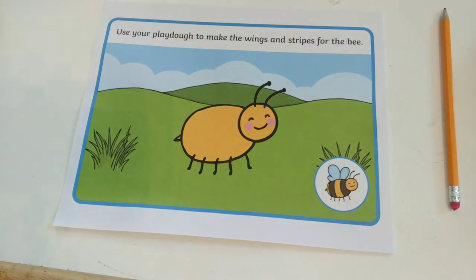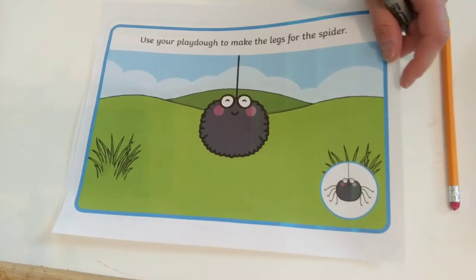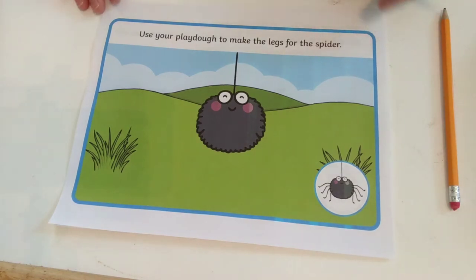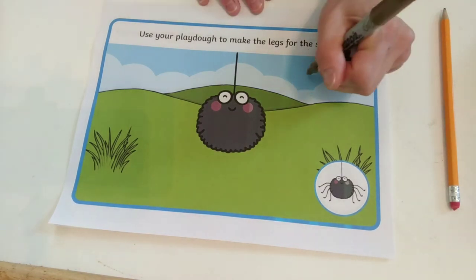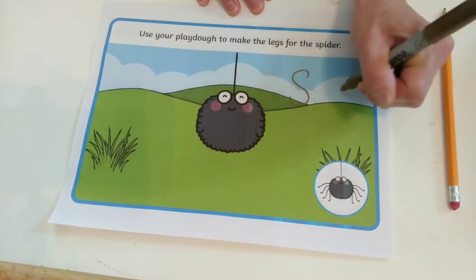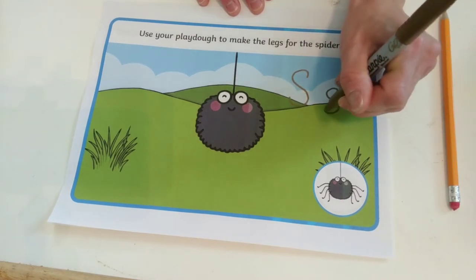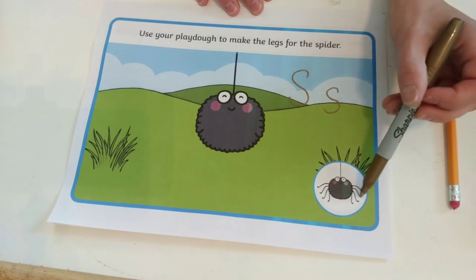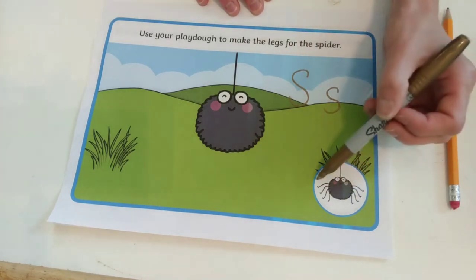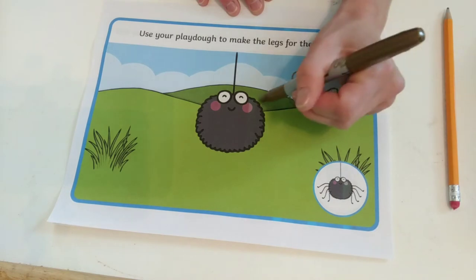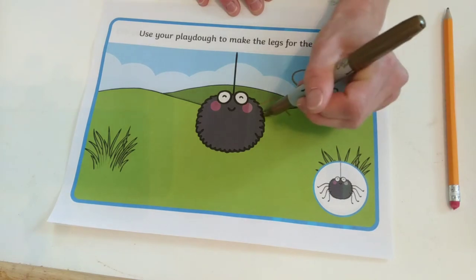The next bug is going to be a spider, just like we talked about. Spider begins with the letter S. Spider. Spiders have eight legs — one, two, three, four, five, six, seven, eight. So four legs on each side.